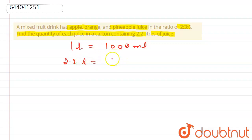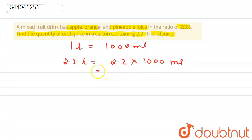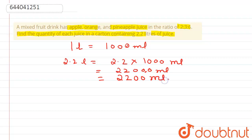So 2.2 liters equals 2200 mL. The ratio given is 2:3:6.